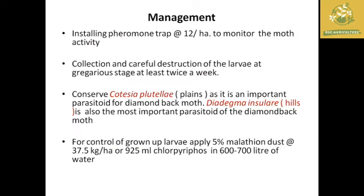Management practices for diamondback moth include installing pheromone traps at 12 per hectare to effectively monitor moths, conserving parasitoids, and collecting and destroying larvae at the gregarious stage at least twice a week. Chemical control includes applying 5% malathion dust at 37.5 kg per hectare, or chlorpyrifos 925 ml in 600 to 700 liters of water per hectare.